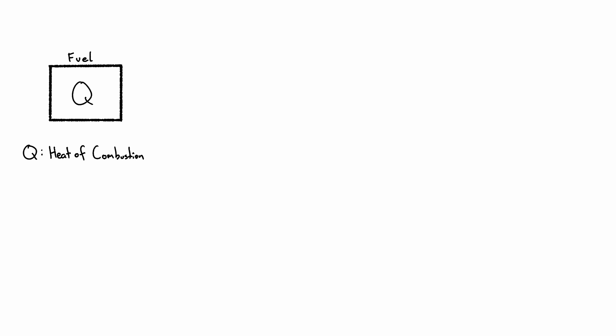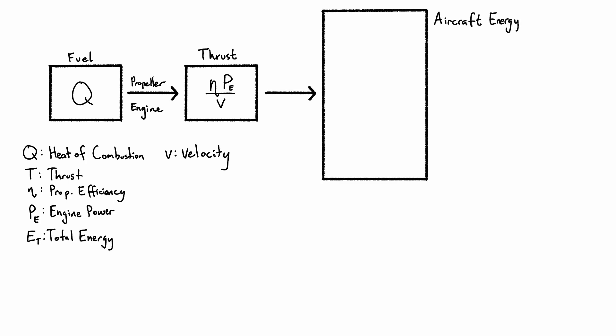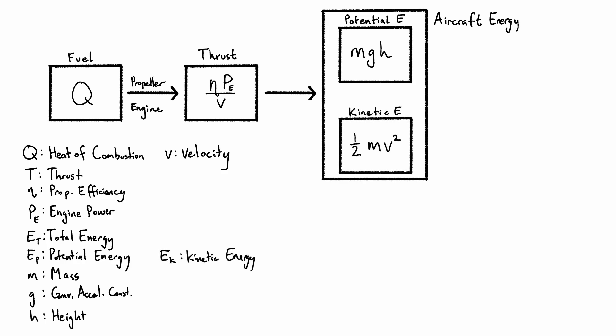All energy in the system starts off as chemical energy stored as fuel. This fuel is burnt, then turned into thrust by the engine and propeller. This thrust is what powers our plane and supplies it with energy. This thrust power can go into either gaining potential energy, altitude, or kinetic energy, speed.